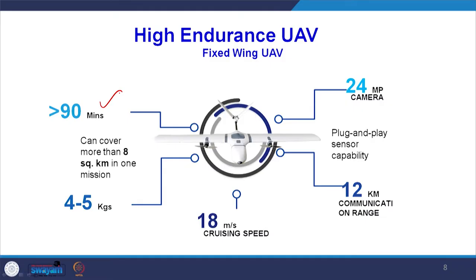If you want high-endurance UAVs, there are fixed-wing UAVs which can fly for a longer time — more than 90 minutes of flight time. The multi-rotor can give only 15 to 20 minutes. Weight is about 4 to 5 kg total, with a 24 megapixel or higher megapixel camera. Another advantage is a 12 kilometer communication range, so you can communicate over longer distances with fixed-wing UAVs.